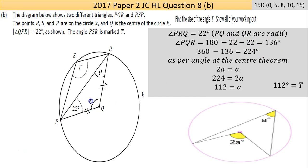The reason I need that is it helps me find this bigger angle here. So 360 take away 136, that big angle there is 224. Now that 224 is twice the angle T, so 224 equals 2a.